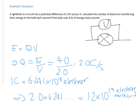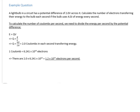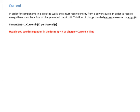Notice that the answer is given to two significant figures because the input data was to two significant figures. That's a simple calculation showing how you might use potential difference. There's also a typed-out solution on screen if you couldn't read the handwriting.